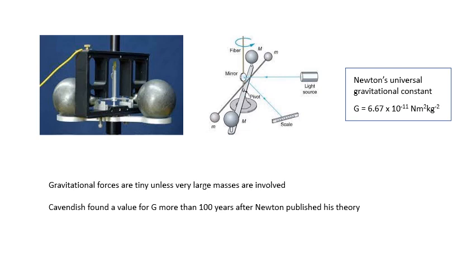It was actually somebody called Cavendish. Henry Cavendish did a very clever experiment, and it was 100 years after Newton came up with his theory. Cavendish did an experiment to find a value for big G. So now we know 6.67 times 10 to the minus 11.